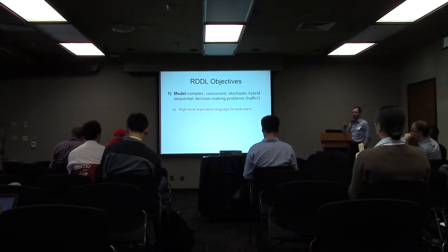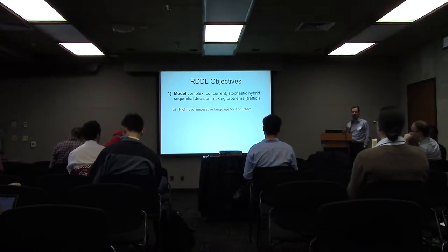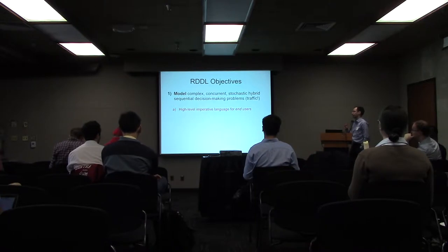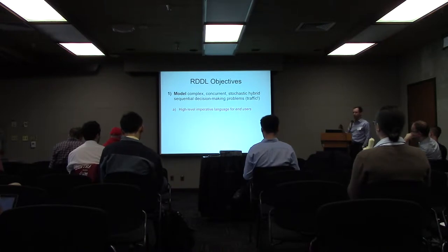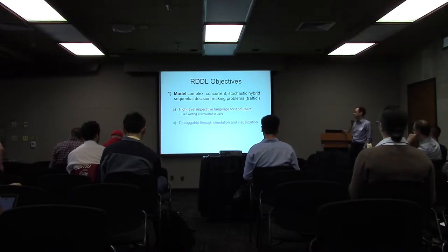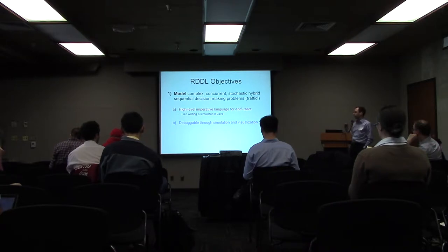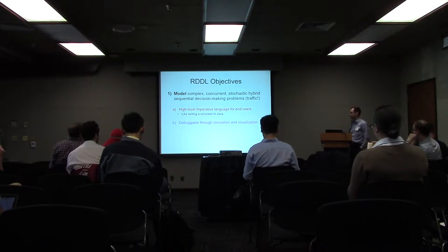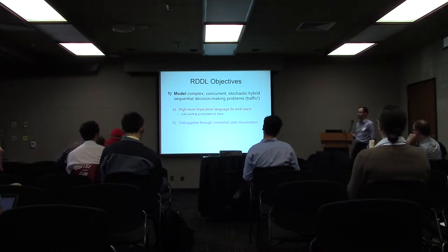You can't tell even a very competent engineer to write down this model as a dynamic Bayesian network — no one speaks that language. So you want a language that is high-level, imperative, procedural, that end users — anyone who understands their domain, be it ecological, be it traffic — can write down. It's like writing a simulator in Java. This is intuitive, and then you can easily debug and visualize it. In the RDDL competitions, they always write things down as a simulator, and visualizing it is very easy.